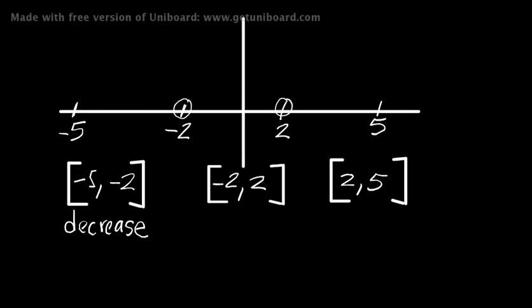On the negative graph, x getting larger is going in this direction. Because minus 5 is smaller than minus 2, getting larger runs towards the right. We can draw a sketch of a decreasing graph just like that. We went from a large y value to a small y value as the x values got larger. That's a decreasing function.